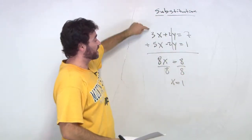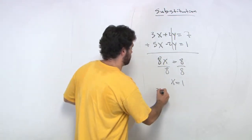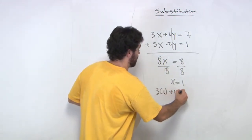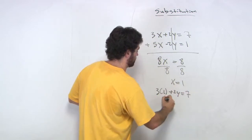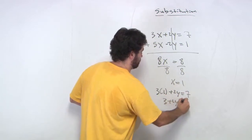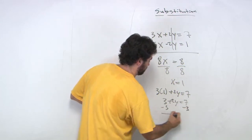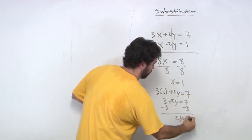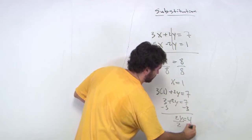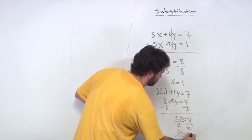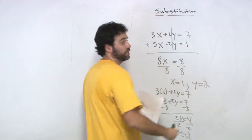I always substitute back into the positive equation. So we get 3 times 1 plus 2y equals 7. That's 3 plus 2y equals 7, minus the 3. We get 2y equals 4, divide by 2, and y equals 2. So y equals 2.